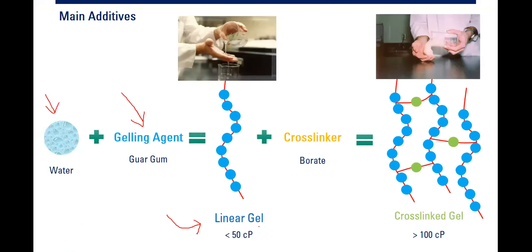Linear gel usually has viscosity below 50 centipoise. To be used as the main fracturing fluid that carries the proppant, we need to add a cross-linker. Most commercial fracturing fluids use borate as the cross-linker. By cross-linking the polymers, we create cross-link gel with sufficient viscosity — higher than 100 centipoise — to transport the proppant.